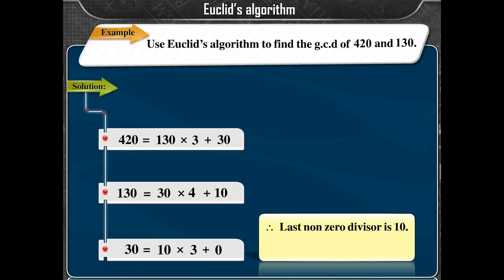Therefore, the last non-zero remainder is 10. Therefore, GCD(420, 130) = 10.